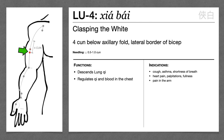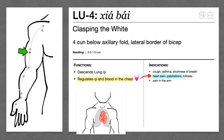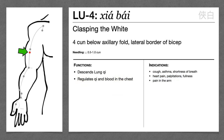Lung 4 is four cun distal to the axillary fold, and it's not super interesting. If a point doesn't have a category, it doesn't always do a whole lot. It descends Lung Qi like every other point on this channel, and it's on the arm so it treats arm pain. One thing that stands out is it regulates Qi and blood in the chest, treating heart pain and palpitations — because the heart and lung reside together in the chest. But Lung 4 is just not commonly used.